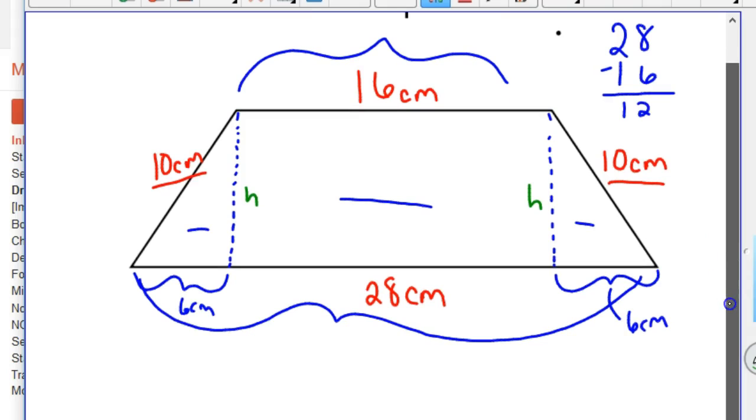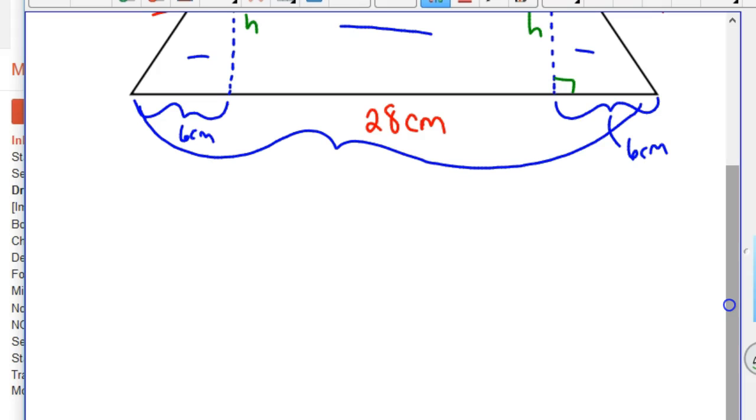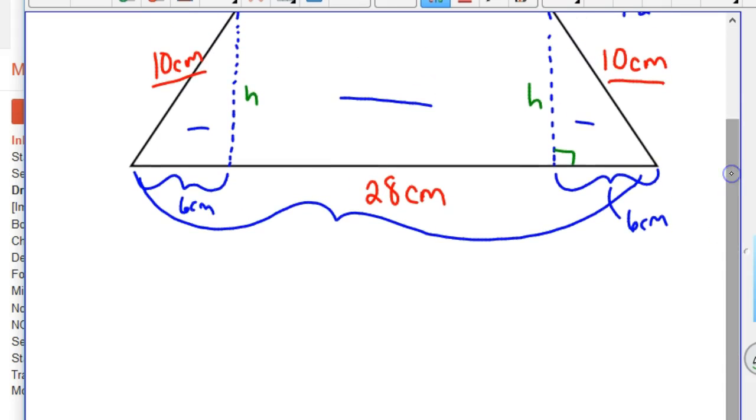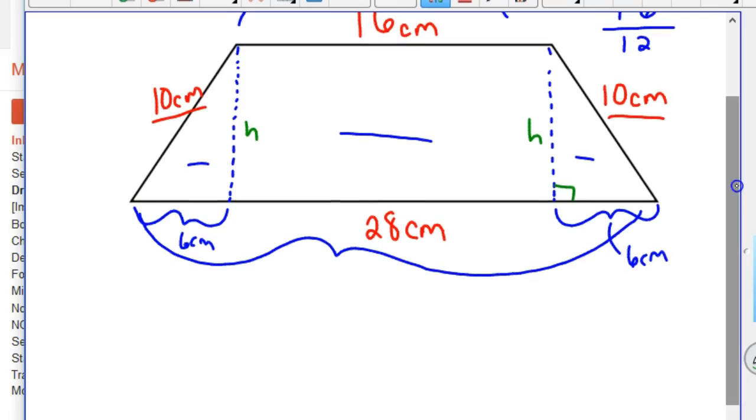which will be the same. And what's neat about this is we have a right triangle here, and so we can use Pythagorean theorem to figure it out. You might also know that this is one of the triangles that come out even, so 6, 8, 10, this is a 6, 8, 10 right triangle,